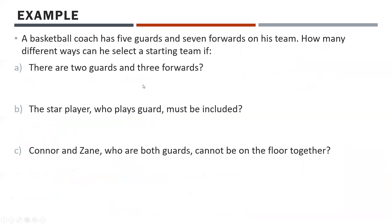A basketball coach has five guards and seven forwards. How many different ways can he select a starting team? Remember: 'and' in math means multiplying, 'or' means adding — we're going to start seeing that come into play here with various conditions.